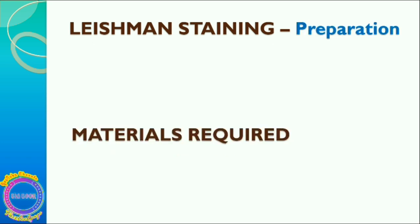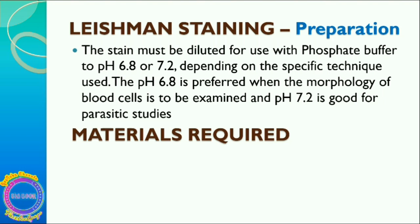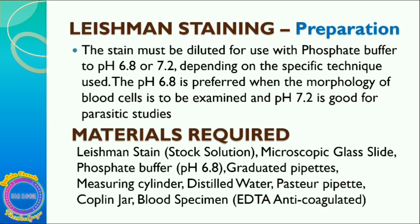For preparation, the stain must be diluted with phosphate buffer to pH 6.8 or 7.2 depending on the specific technique used. pH 6.8 is preferred when the morphology of blood cells is to be examined, and pH 7.2 is preferred for parasitic studies. Materials required include: Leishman stock solution, microscopic slides, phosphate buffer, pipettes, measuring cylinder, distilled water, Pasteur pipette, coupling jar, and anti-coagulated blood specimen.